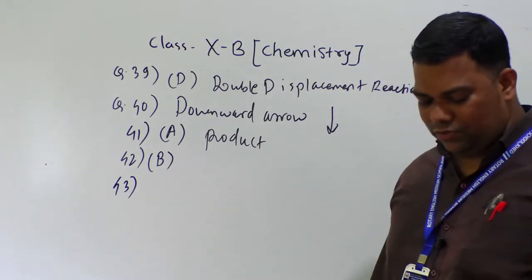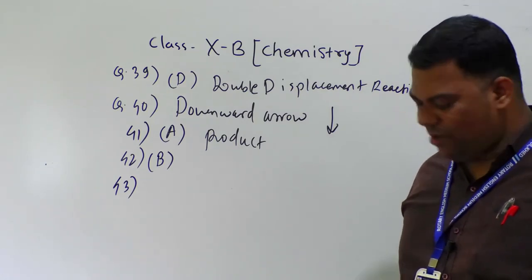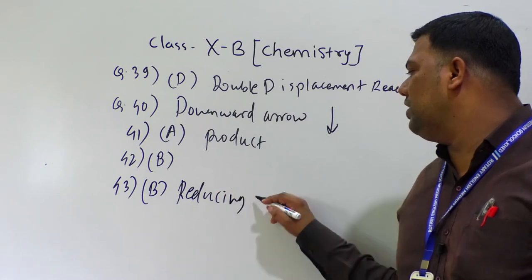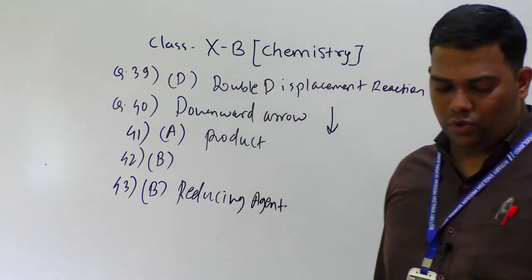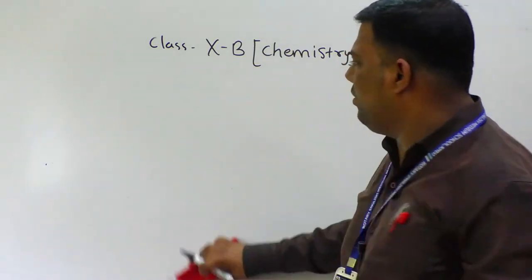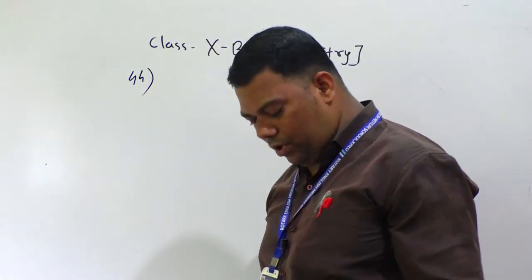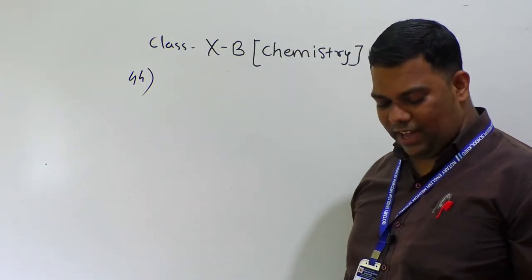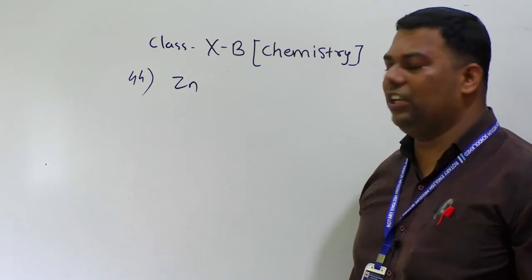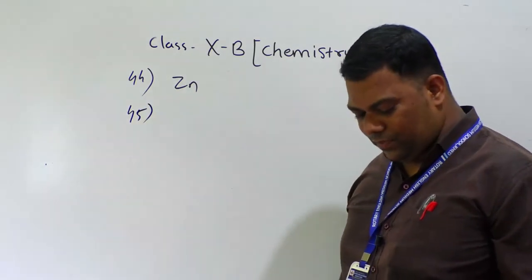Question number 43: the substance which reduces the compound is called a reducing agent. The answer is option B — reducing agent. Question number 44: which of the following metals can prevent corrosion of iron? We already discussed this in the theory part — in the corrosion and prevention section. The answer is zinc.